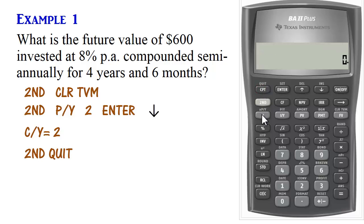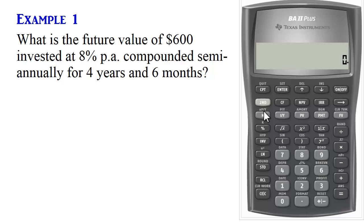Next, we want to input N. So this investment is made for 4 years and 6 months, which is 4.5 years. So we do 4.5 times the P/Y. P/Y in this question is 2, so we multiply that by 2. We get 9.